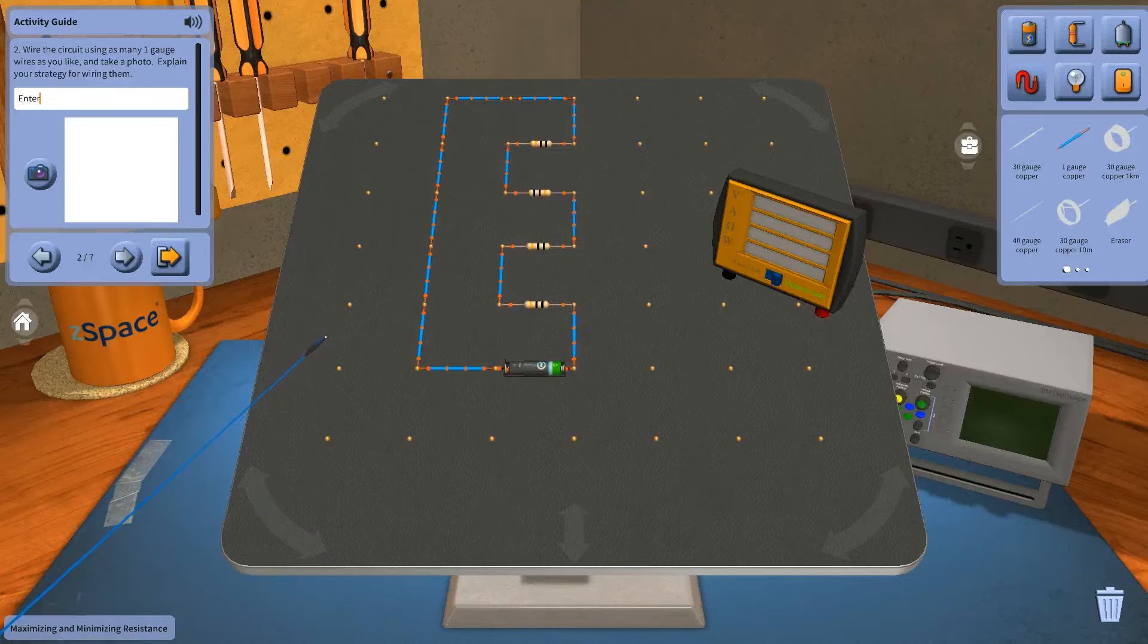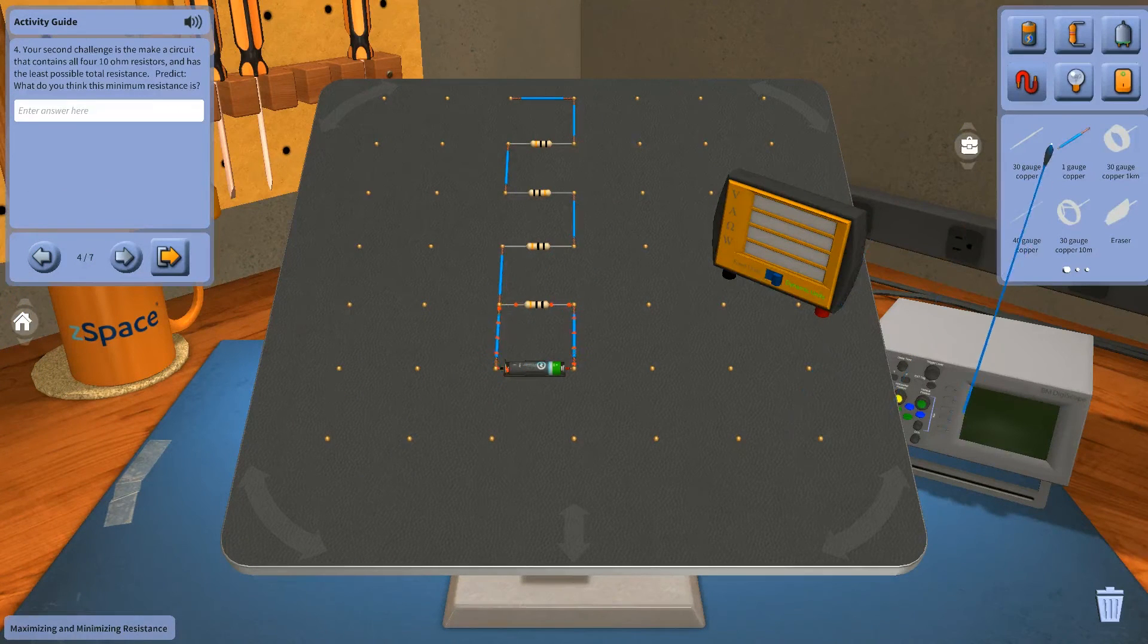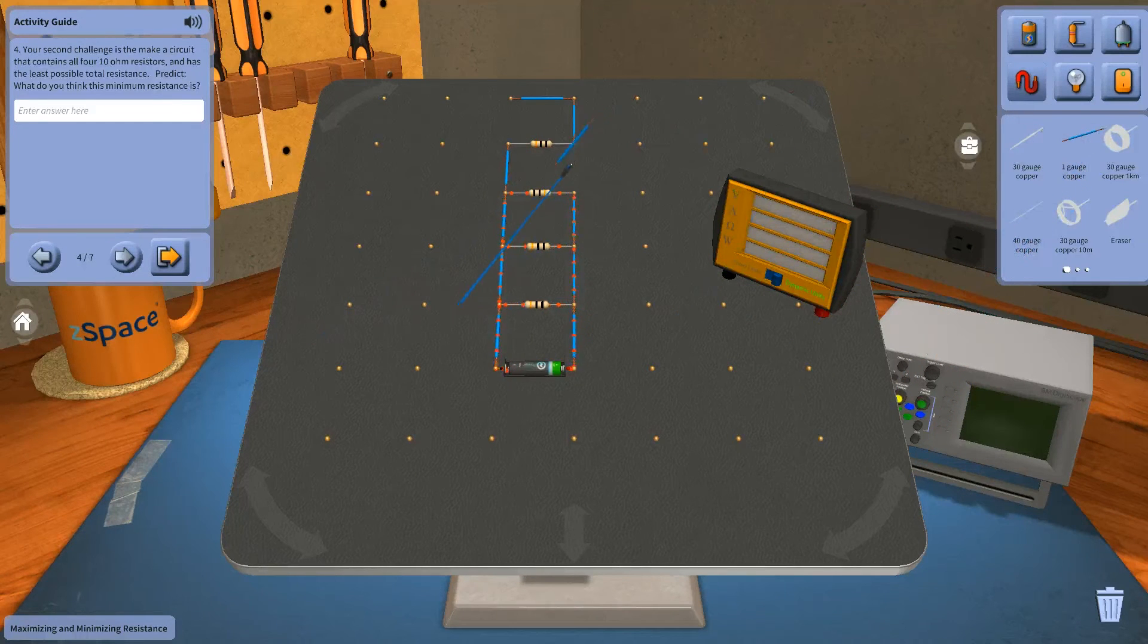In this activity, students will explore the difference in characteristics of a parallel and series circuit by designing circuits with given resistors such that the total resistance of the circuit is maximized or minimized. Is that fun enough for you?